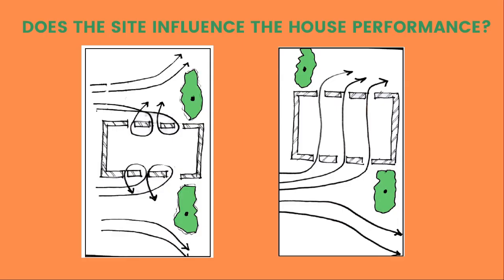Of course, there's also the site and how it influences the building's performance. These two images show that the site greatly influences performance — basic things like planting or hillsides conduct wind and air in certain pathways. In the first sketch on the left, vegetation positioned at the far end of the house causes wind to not really enter through the building.